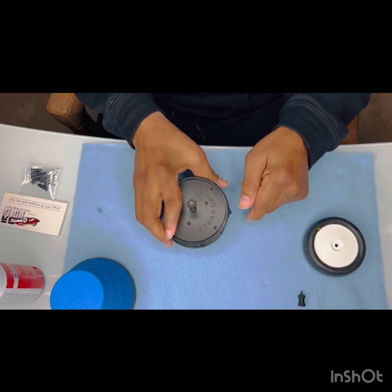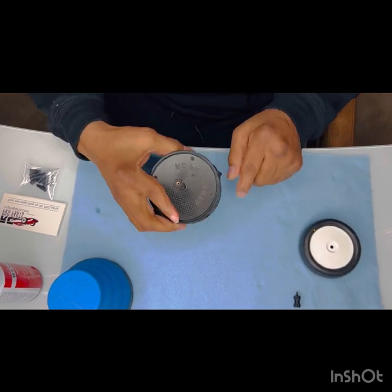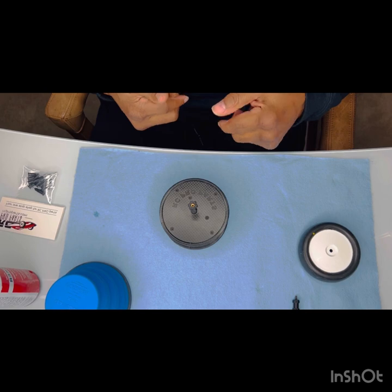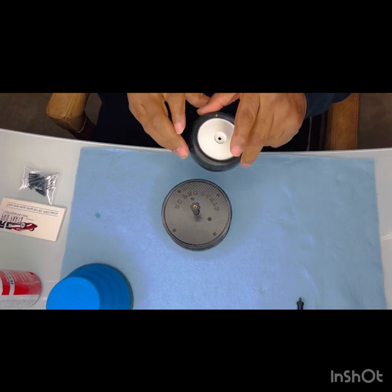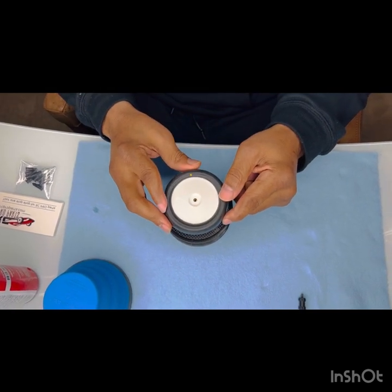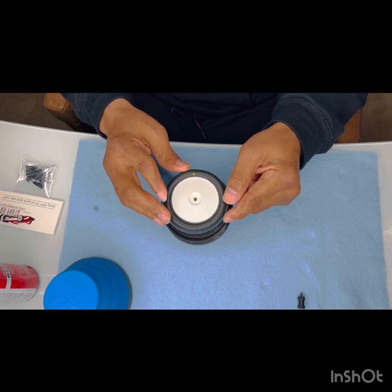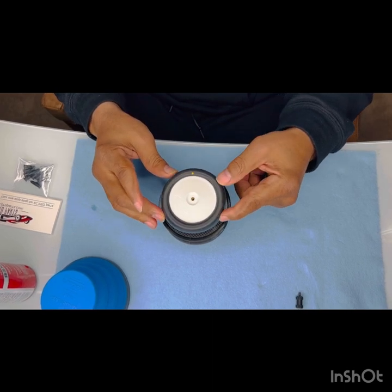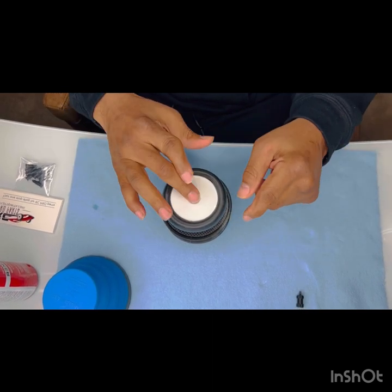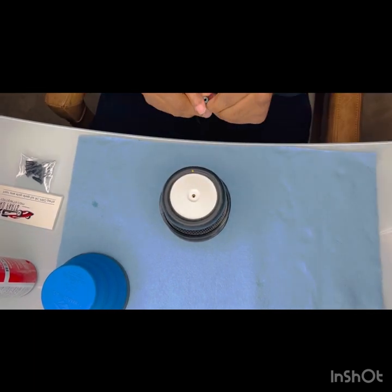First of all, take your sidewall gluer and turn it towards you so the switch is pointing forward. Secondly, place the wheel on the side that you want to glue the sidewall to. Press it firmly down to make sure it's fully seated onto the sidewall gluer.